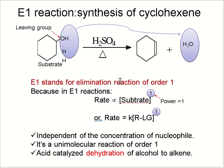Since this is an E1 reaction, the reaction rate depends only on the substrate — it is a unimolecular reaction. The acid-catalyzed dehydration of alcohol to alkene is completely independent of the concentration of the nucleophile, because the nucleophile's concentration does not change the reaction rate. That is why this is called a unimolecular reaction and is classified as E1.